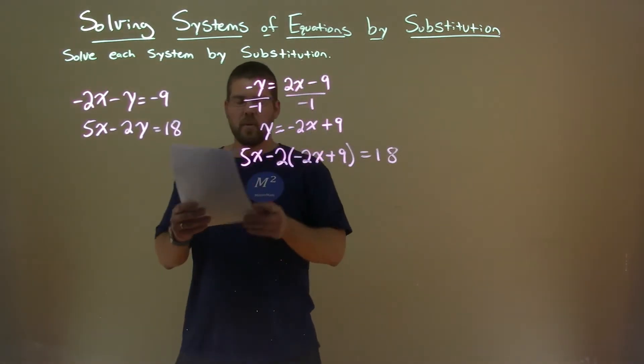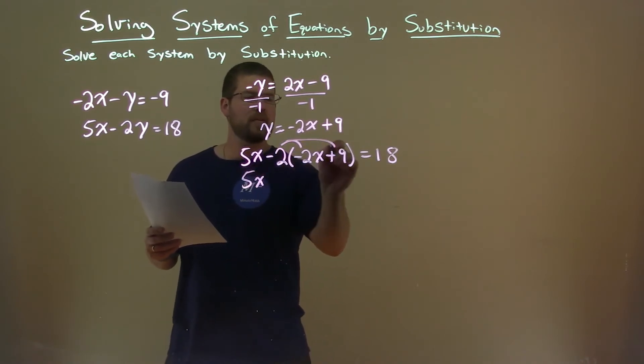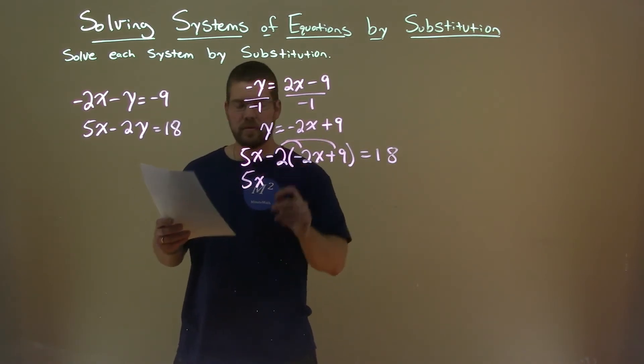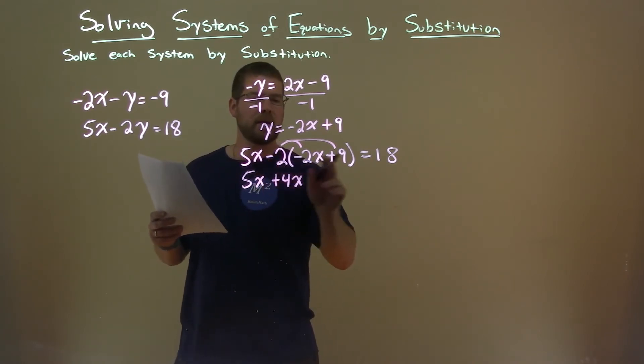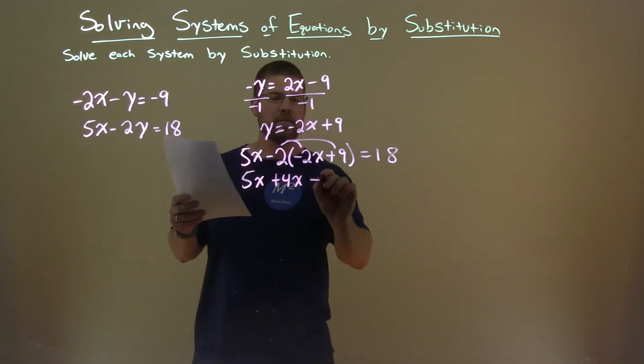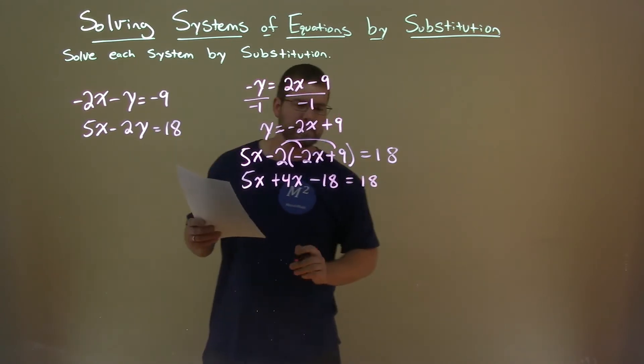So now we want to get x by itself. Solve for x. 5x comes down. Distribute the minus 2 to both parts. Minus 2 times minus 2x is positive 4x. Minus 2 times 9 is negative 18, and that's equal to 18 here.